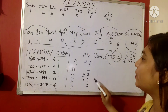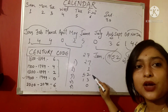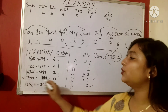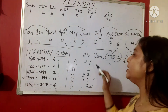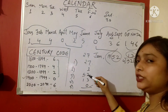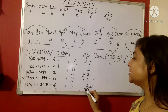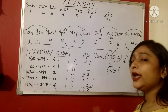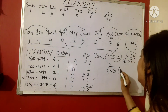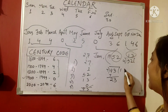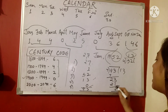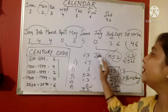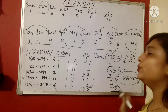Now add all the values: 27 + 1 + 52 + 13 + 0 = 93. Divide 93 by 7 — because after every 7th day the days repeat. We get a remainder of 2, and 2 is the code for Monday. So on 27th January 1952, the day was Monday.